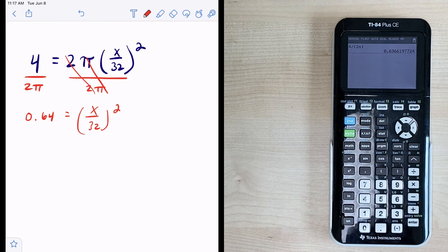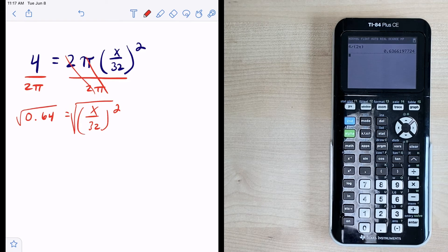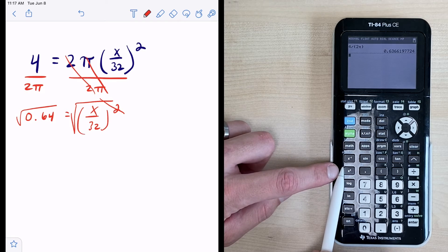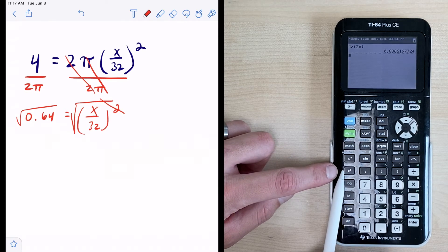Okay all right now what we're going to do is take the square root of both sides right that will get rid of that exponent of a 2. So now here's how we can do that. The square root symbol is this little blue symbol right here above the squared button.